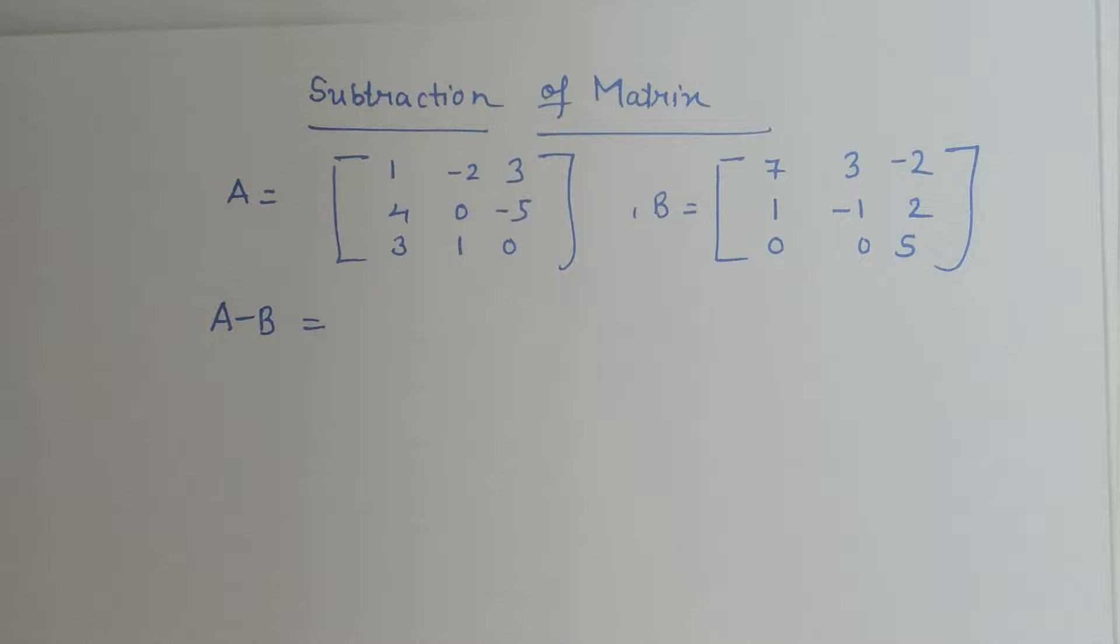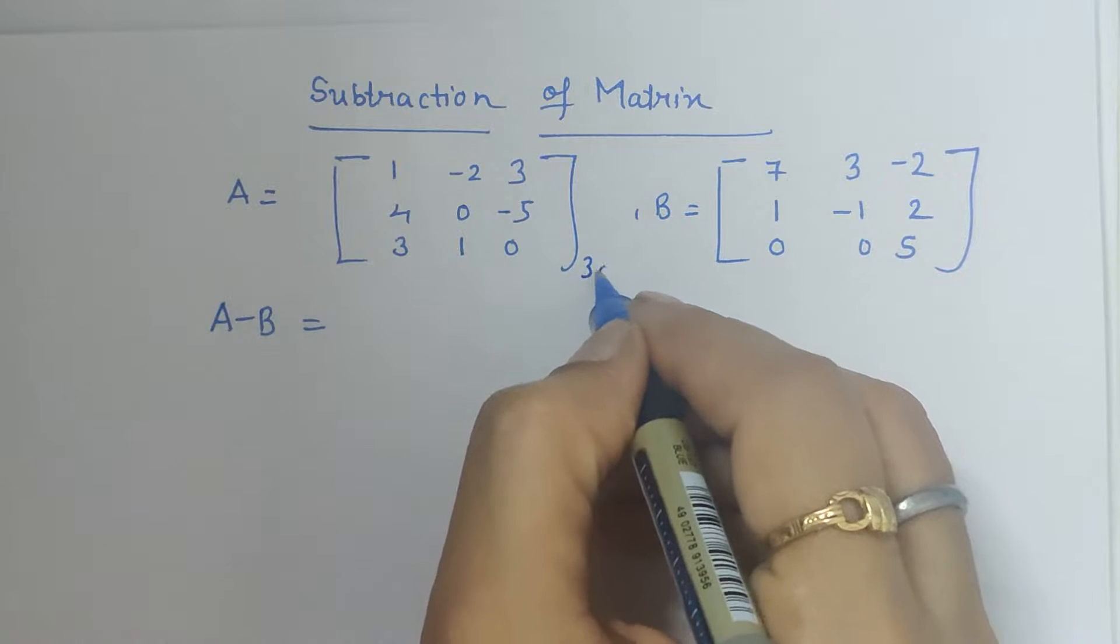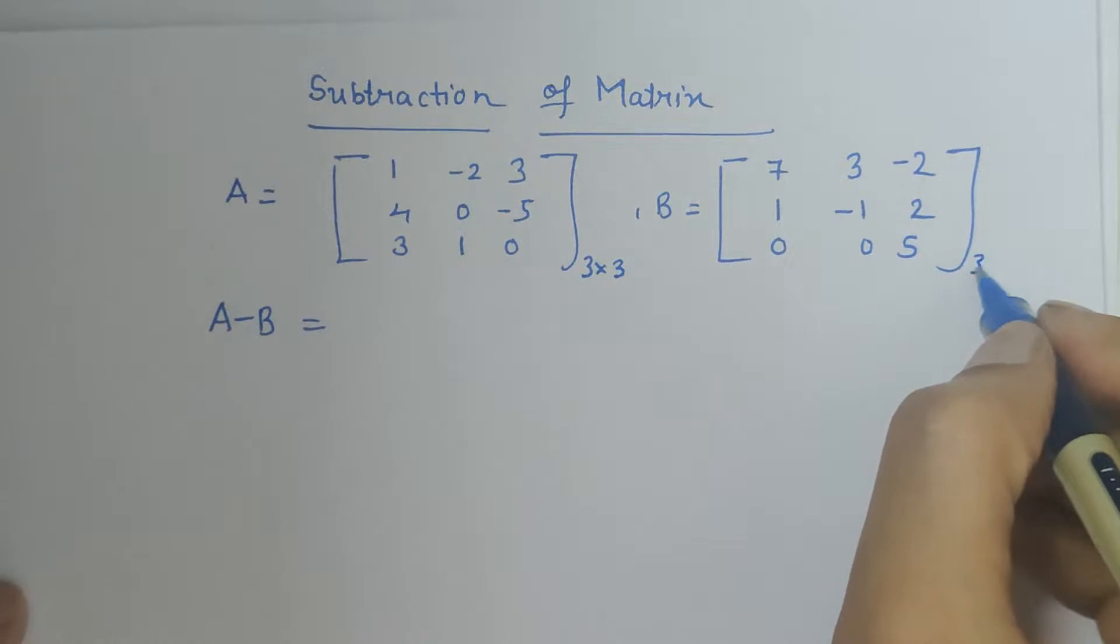So here we have been given A minus B. Here important thing is to keep in mind A minus B will not be equal to B minus A every time. So here we see that this matrix is 3 by 3 order and this matrix is also of 3 by 3 order.